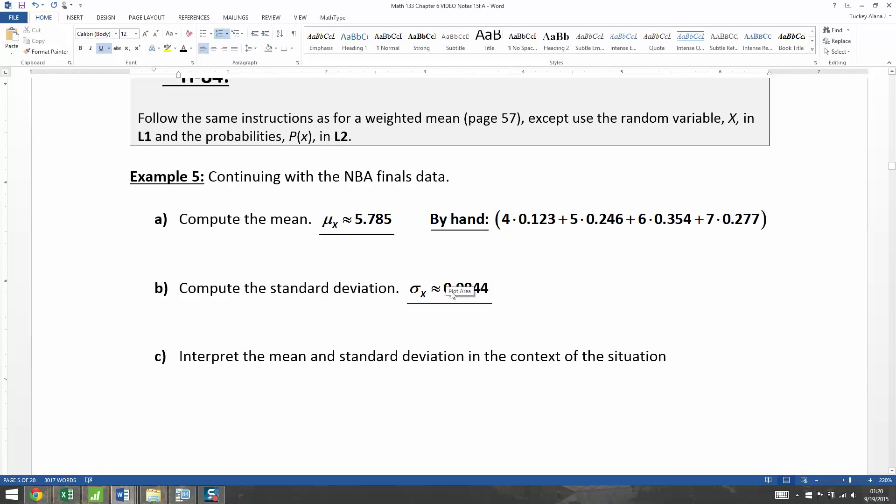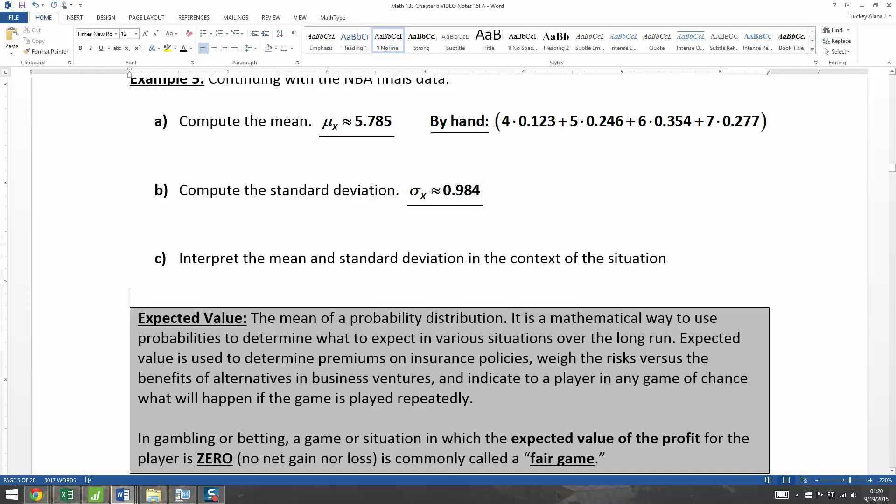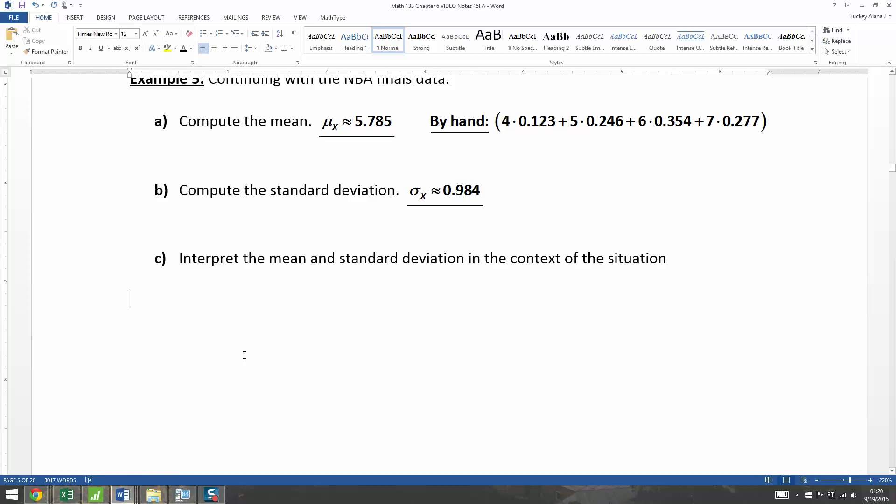All right, so now we want to interpret the mean and standard deviation in the context of the situation. I take it back. I should just do one decimal place. I'm going to match the decimal places here. So, if you were to randomly select an NBA finals series, you would expect it to last 5.785 games, give or take 0.984 games.